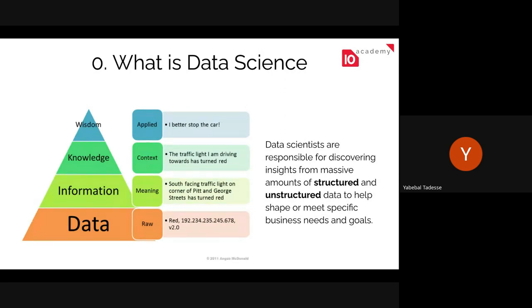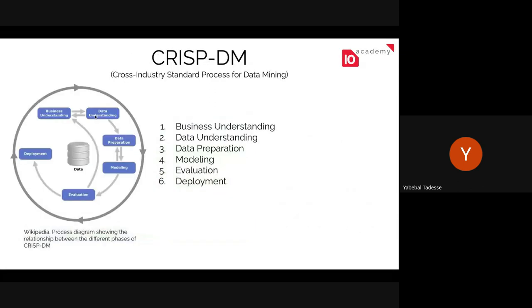That's how you view the data value chain: data → meaning → contextualized information → action. This is theoretical understanding, but having it helps you contextualize many things. We repeatedly ask you to write the information, meaning, context, and application for any data you have. Another aspect is decomposing this into actual work using frameworks.